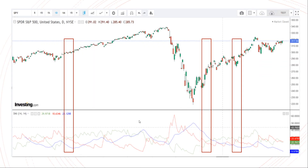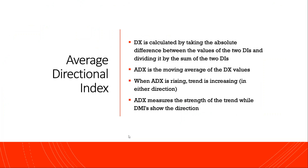The blue line is the Average Directional Index (ADX), derived using DM plus and DM minus. DX is calculated by taking the absolute difference between DM plus and DM minus divided by their sum. If we take the moving average of DX over 14 days, we derive the ADX.